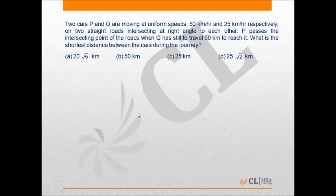This is a problem of number system and it is of moderate difficulty level. There are two cars P and Q moving at uniform speeds, 50 and 25 kilometers per hour respectively, on two straight roads intersecting at right angles to each other.